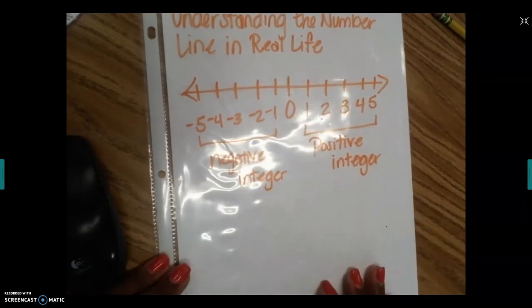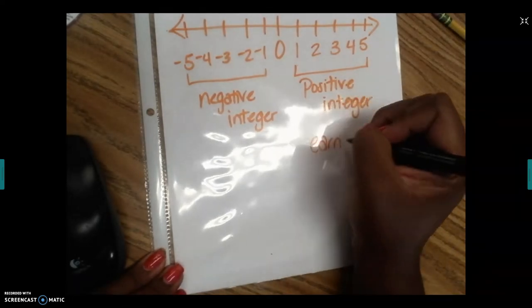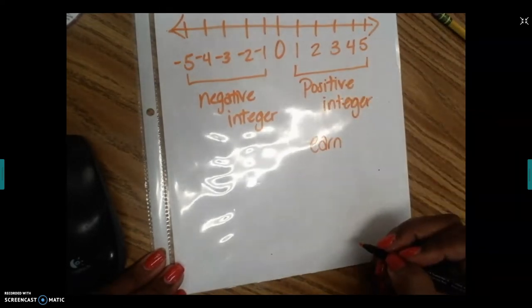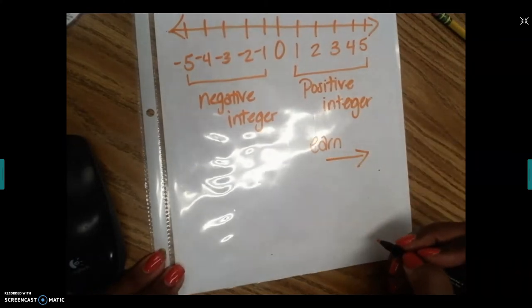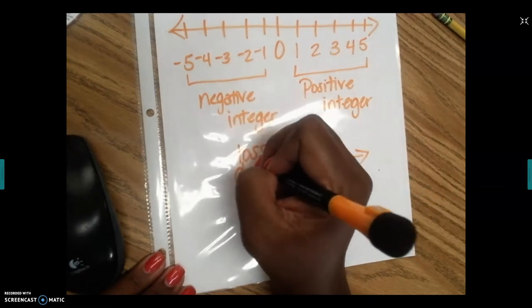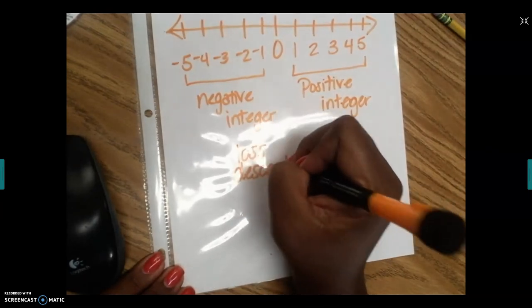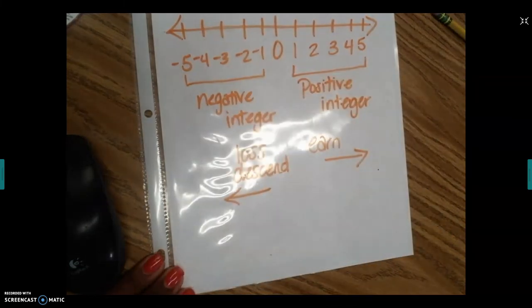As we continue here, we're going to see that earning, words like earn, are going to move me to the right side of my number line. Words like loss or descend will move me to the left of the zero on my number line.